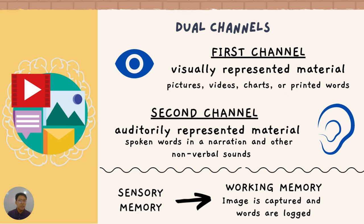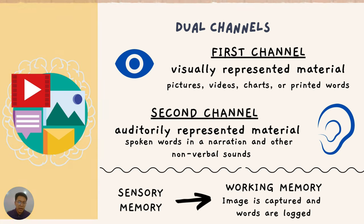These two channels are also known as your sensory memory. Through the sensory memory, we will be having some information to place in our working memory, such as images being captured and words being logged in our brain.